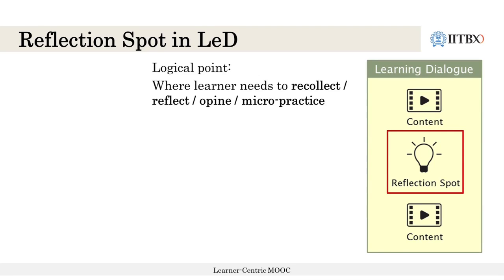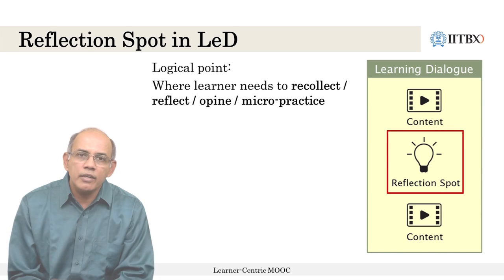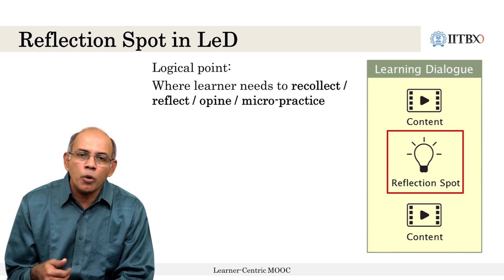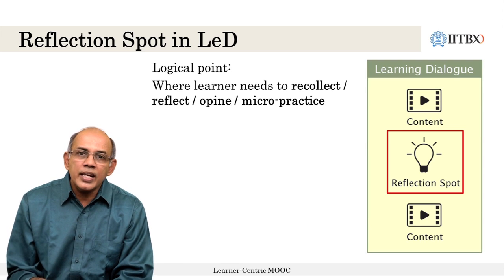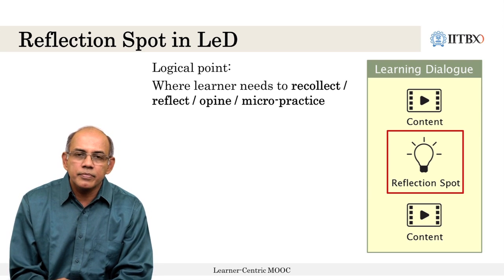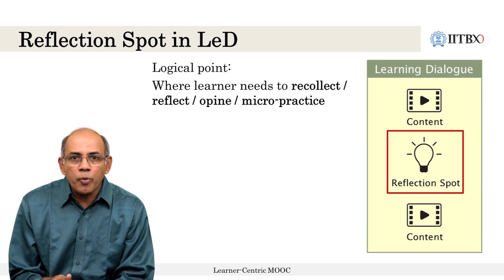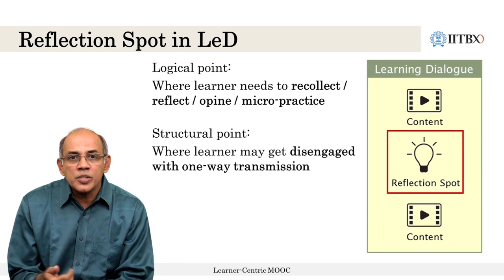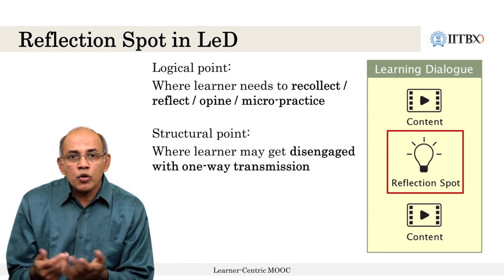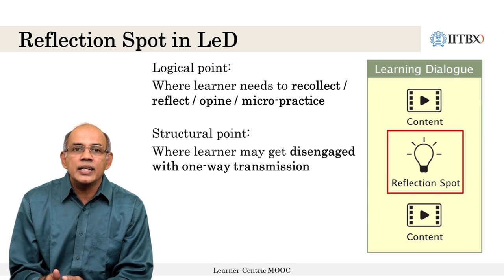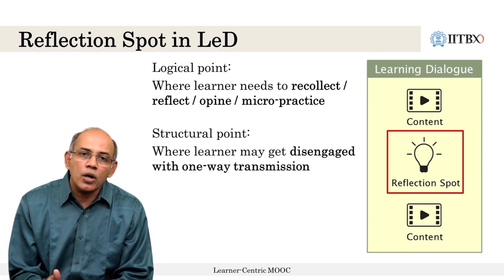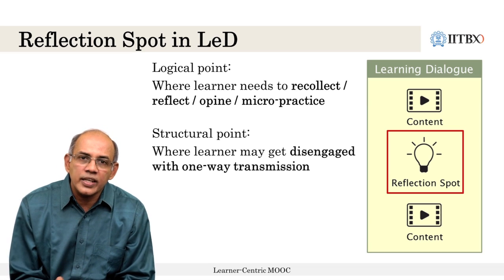The reflection spot in an LED is a logical point where we provide the learner with opportunities for micro practice — to assimilate what they have just learned, as well as to express their opinion or interact with the content in some way. It is a structural point where learners may get disengaged, so at any point when we feel the learner is likely to disengage, that is a good spot to introduce a reflection spot.